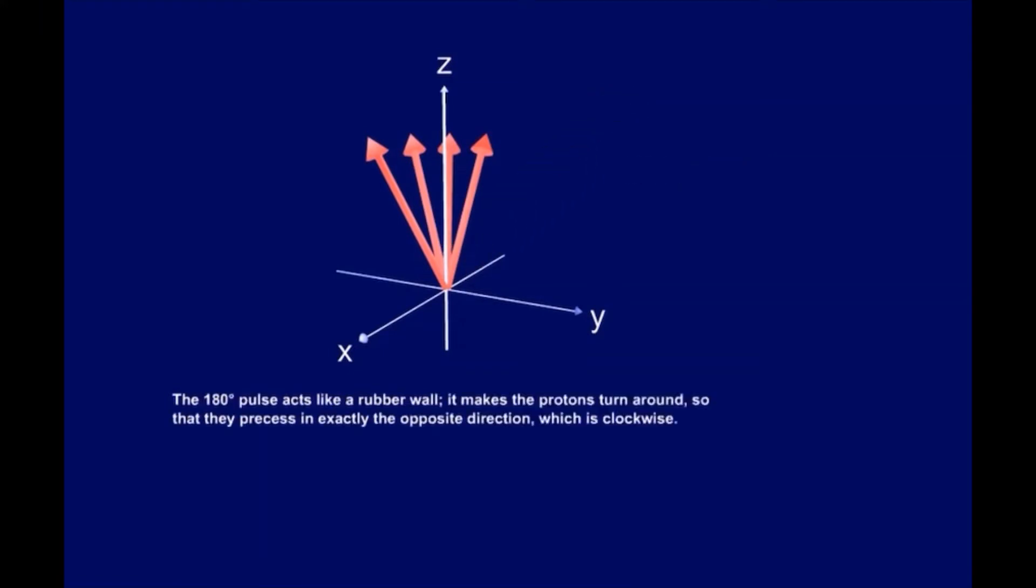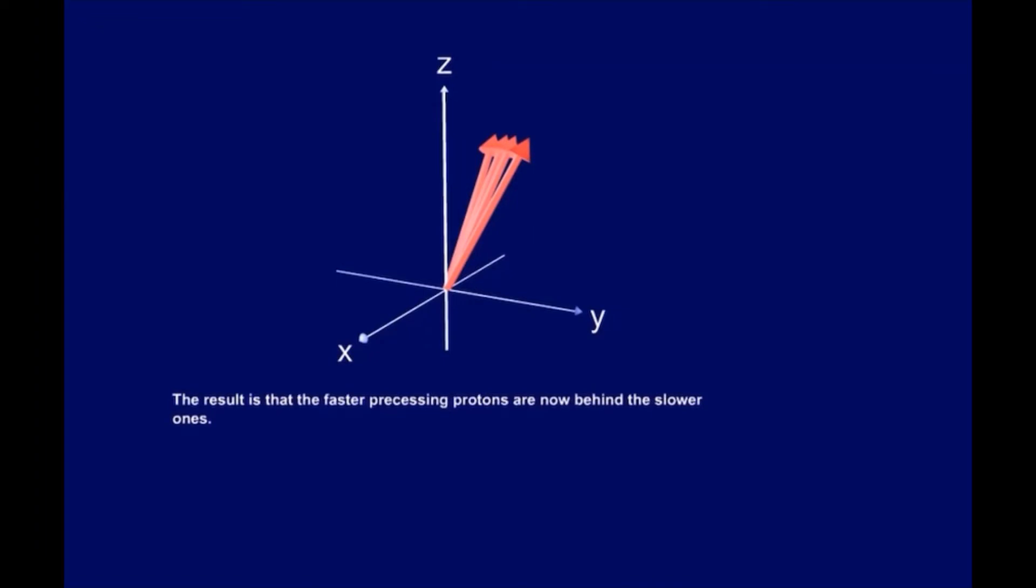The 180-degree pulse acts like a rubber wall. It makes the protons turn around, so that they precess in exactly the opposite direction, which is clockwise. The result is that the fast-precessing protons are now behind the slower ones. If we wait another time, half of TE, the faster ones will have caught up with the slower ones.